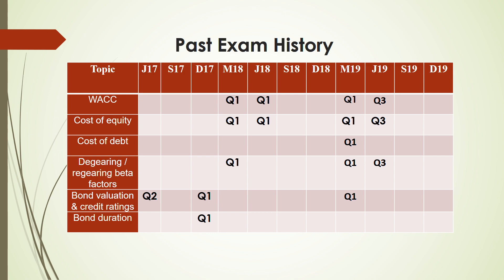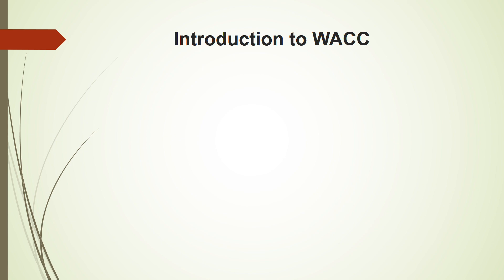WACC is usually asked in Question 1, but it can be asked in many contexts: it can be linked with an acquisition or merger when you have to calculate the value of a company; it could be asked in a reconstruction or reorganization to know the changes in WACC after reorganization; or it could be asked as an investment appraisal question to calculate net present value. The only area where WACC is not asked is risk management — other than that, WACC appears in all other areas of the syllabus.